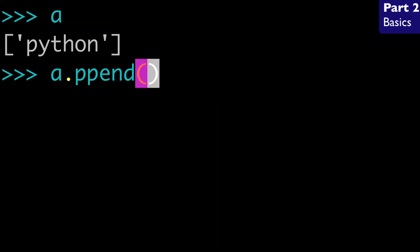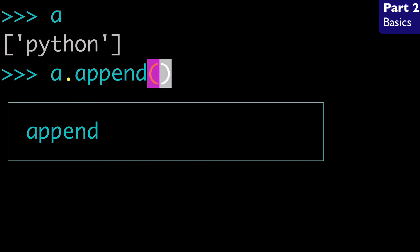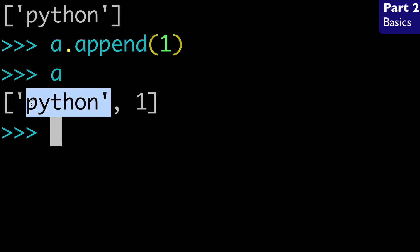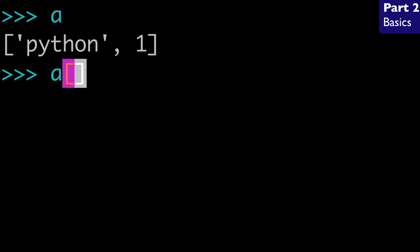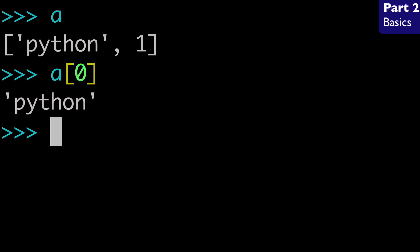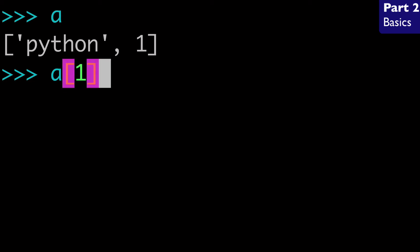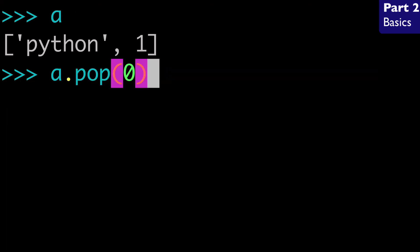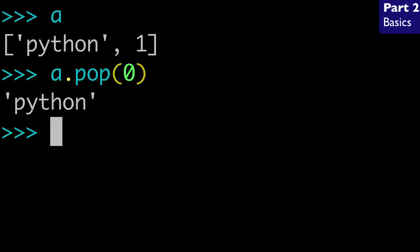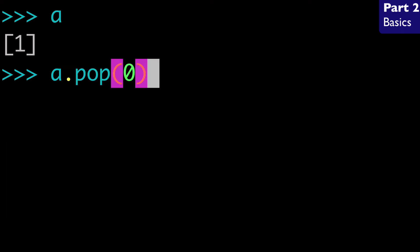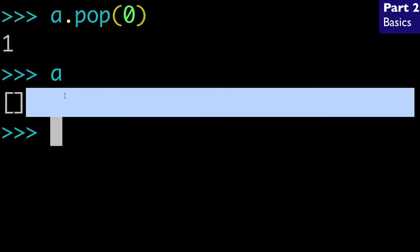Let's say I added another value to the list — I'll add 1. So now we have "Python" and 1. How do we remove "Python"? Slice notation tells us that a[0] is "Python" and a[1] is 1. So we do a.pop(0), and that will return "Python". When we look at our list, Python is gone and we only have 1 left. If we run pop again with no argument, we return that value and now our list is empty — we've popped every value.